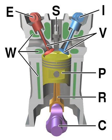An internal combustion engine is a heat engine where the combustion of a fuel occurs with an oxidizer in a combustion chamber that is an integral part of the working fluid flow circuit.